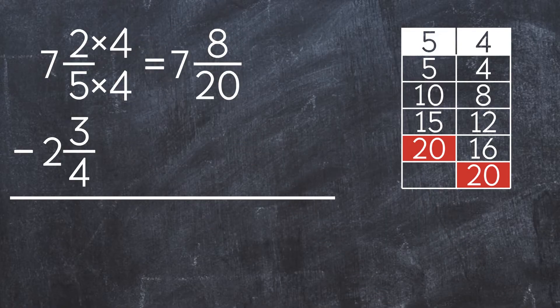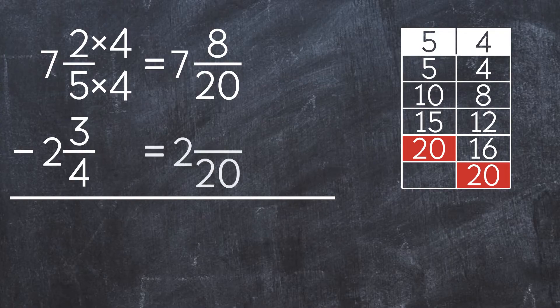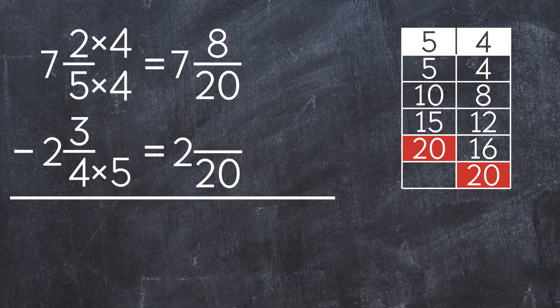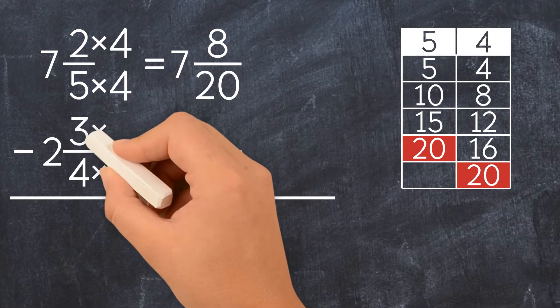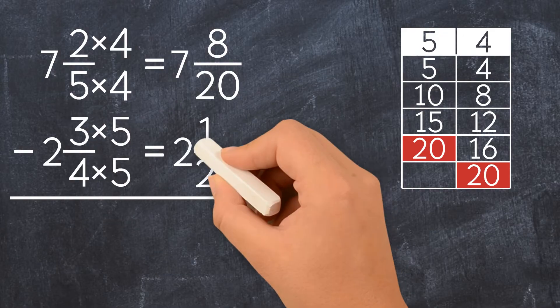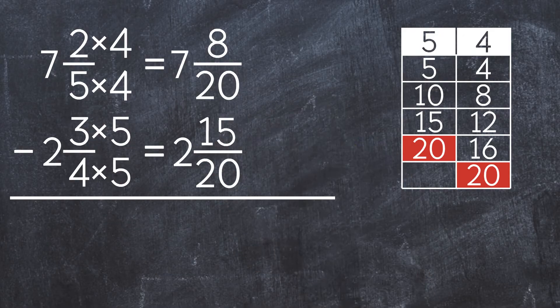Now let's rename the second mixed number. To get 20 in the denominator, we multiply 4 by 5. We also multiply the numerator by 5, to get 2 and 15 twentieths.